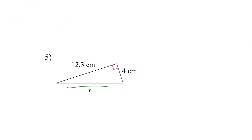Number 5. Again, X is my hypotenuse. So 12.3 squared plus 4 squared equals X squared. So 12.3 squared equals 151.29 plus 16 equals X squared. This is 167.29. And then the square root on both sides is 12.9.